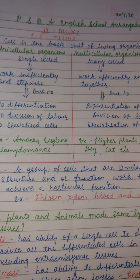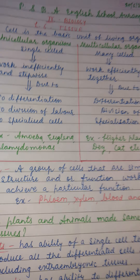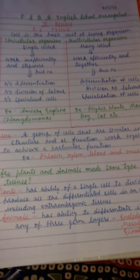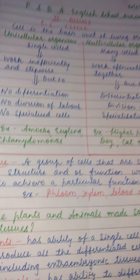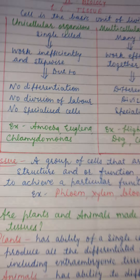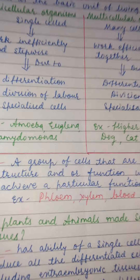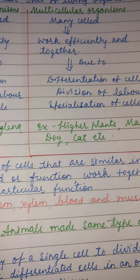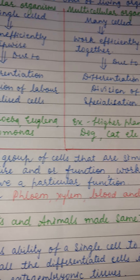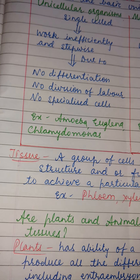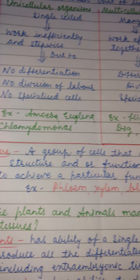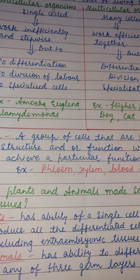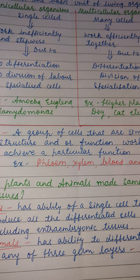This group of cells is called tissue. Tissue is defined as a group of cells that are similar in structure and function and work together to achieve a particular function.